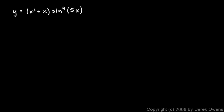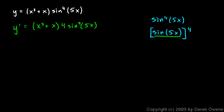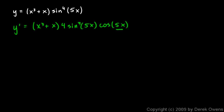We'll do one more and won't factor it all the way out — just apply the product rule. The two functions are (x cubed plus x) and sine to the fourth of 5x. The derivative starts with the first, (x cubed plus x), times the derivative of the second, which requires the chain rule. Sine to the fourth of 5x is (sine of 5x) to the fourth, so applying the power rule gives 4 times sine cubed of 5x, times the derivative of sine of 5x, which is cosine of 5x times 5.